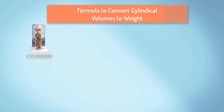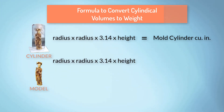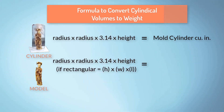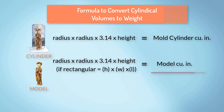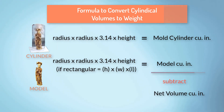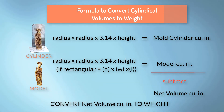Follow that same procedure to arrive at the volume of the model, if it is also cylindrical shaped. If it is square or rectangular, use the earlier step to find its volume of height times length times depth. Next, subtract the volume of the model from the volume of the cylinder. Convert the answer by the weight constant specified earlier, and you have calculated the precise material volume needed for a cylindrical shaped mold container.